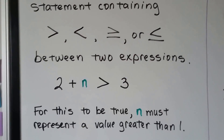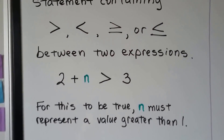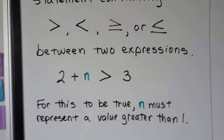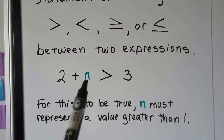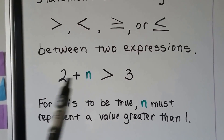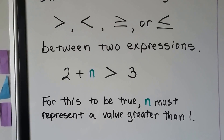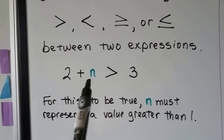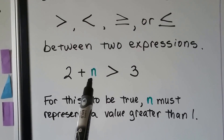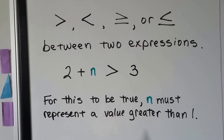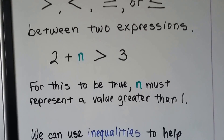So if we have two plus n is greater than three, for this to be true, n must represent a value greater than one. If it were one, then we'd have three is greater than three, and that wouldn't be true. So if n was greater than one, like 1.5 or 2, then it would be greater than three — that would make it true. So that's an inequality.